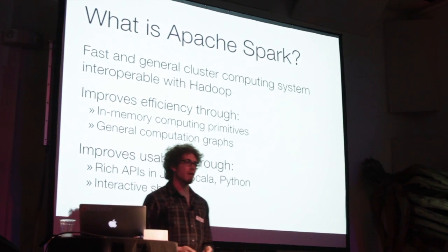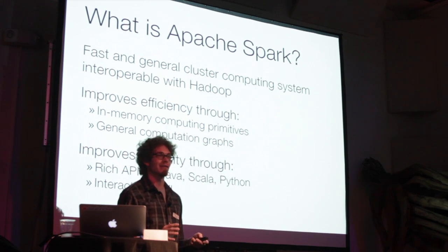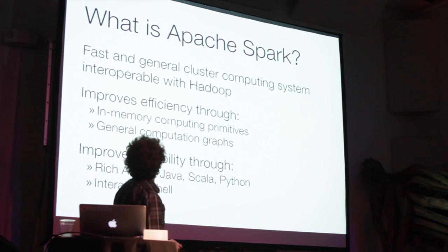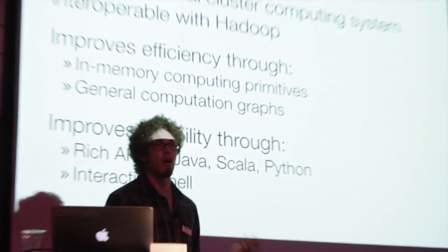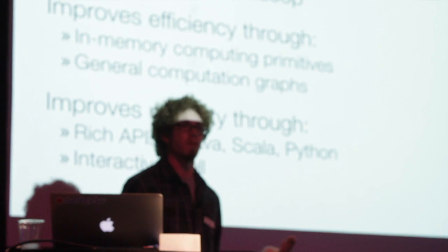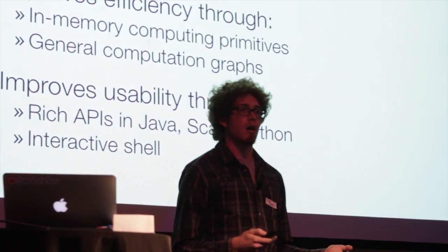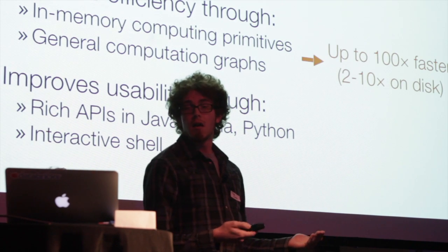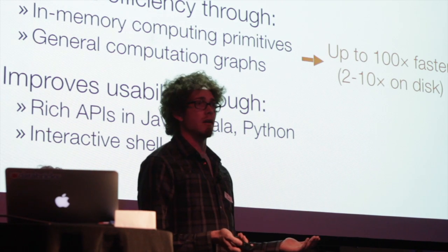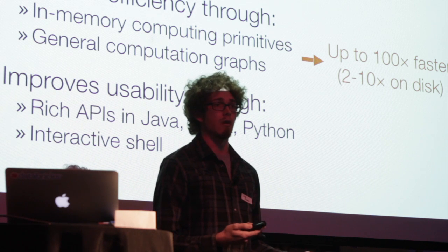Spark is interoperable with Hadoop, and compared to a lot of these other systems, Spark offers a few nice benefits. Spark is able to leverage the large amounts of memory available on modern compute clusters to give you big performance benefits. It also has a very rich computation model with a wide array of primitives, and as a result it can achieve large speedups compared to systems like Hadoop for certain workloads.